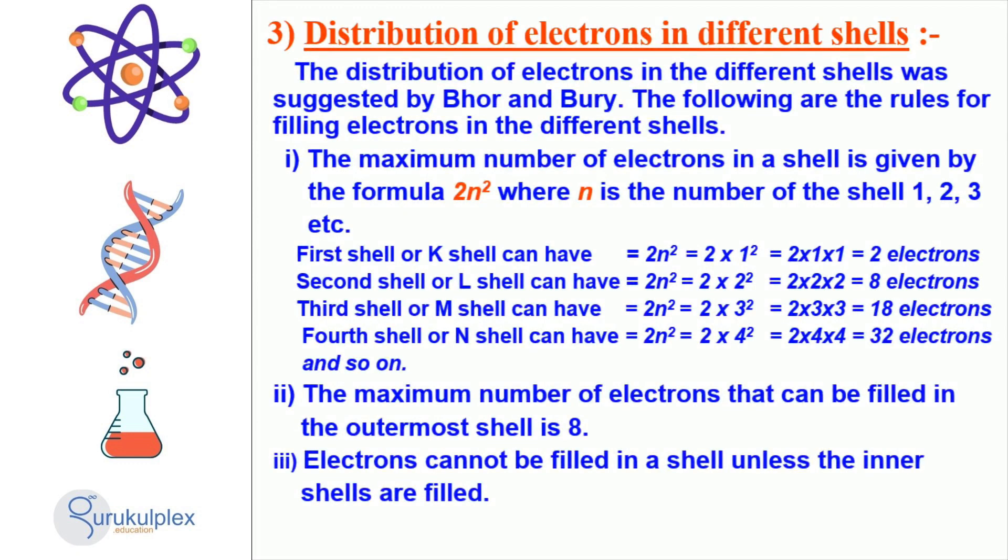Electron distribution in different shells is an interesting area of research in atomic physics. Bohr and Burry's rules describe the maximum number of electrons that can fit in each shell and how they are filled. The maximum number of electrons in a given shell is determined by the formula 2N², where N is the number of the shell. The maximum number of electrons in the outermost shell is 8, and electrons must be filled in inner shells before they can be filled in outer shells.